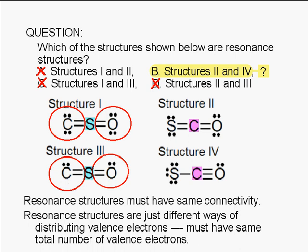Obviously, structures 2 and 4 are resonant structures. Structure 2 has 8 plus 8 for a total of 16 valence electrons and structure 4 has 8 plus 8 for a total of 16 valence electrons as well. The correct answer is B.